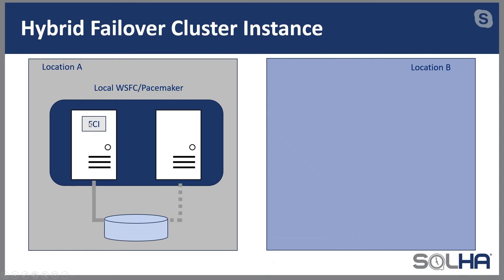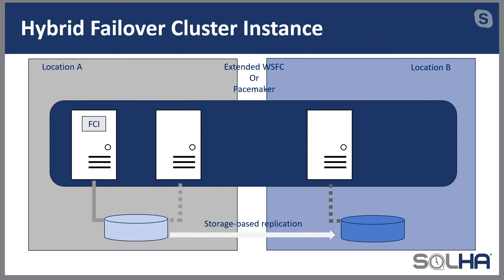That's why we usually use an availability group, log shipping, or something else to make the storage extra available. How FCIs work: an FCI is running on a node of the cluster, and its storage is owned by that node. The storage associated with the FCI isn't seen by the other server until the FCI fails over, at which point ownership transfers. To achieve disaster recovery with FCIs, you've got to somehow get your storage replicated somewhere else — in this case, location B or Azure.